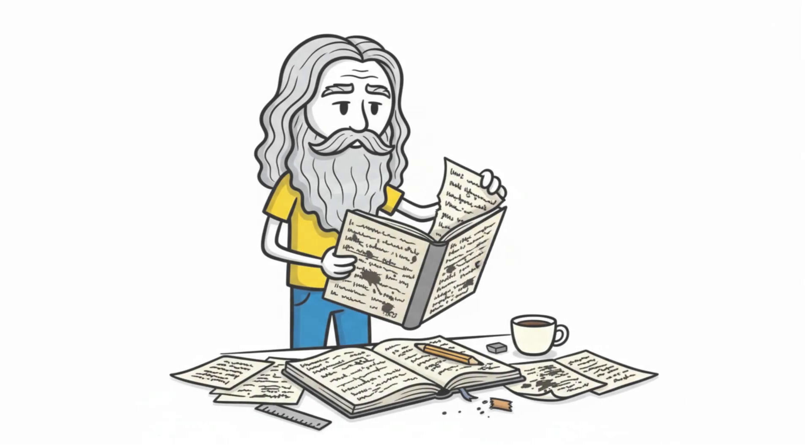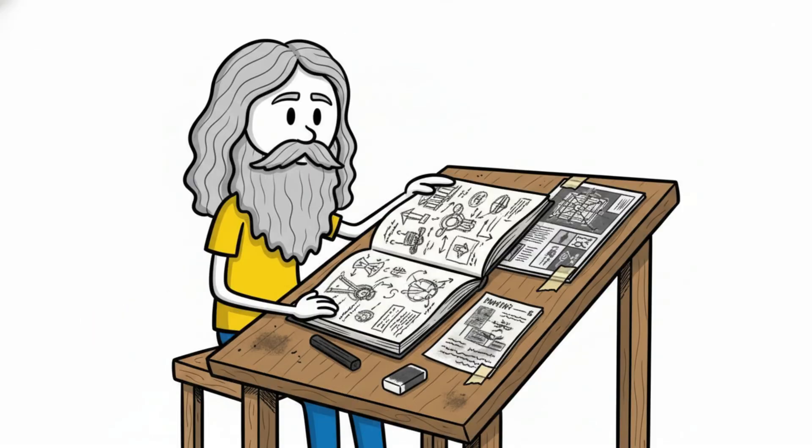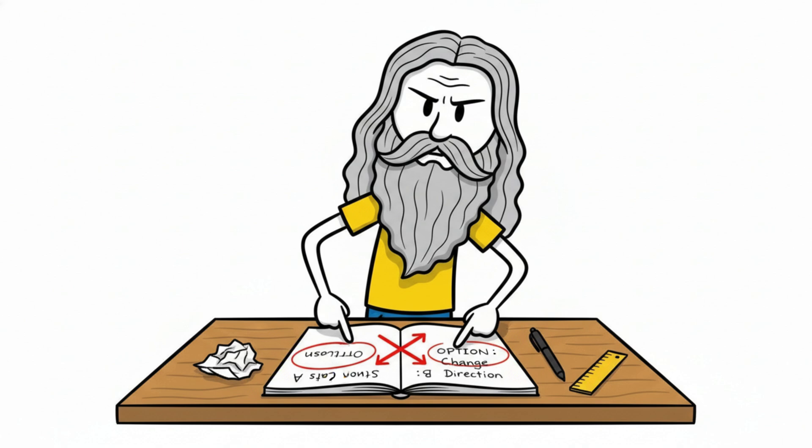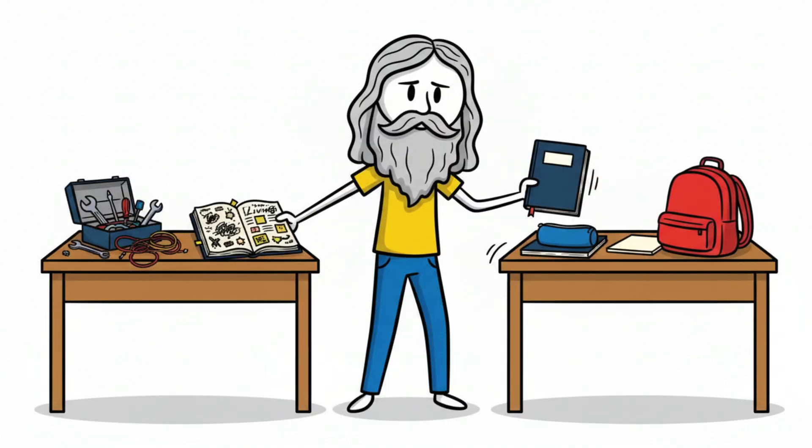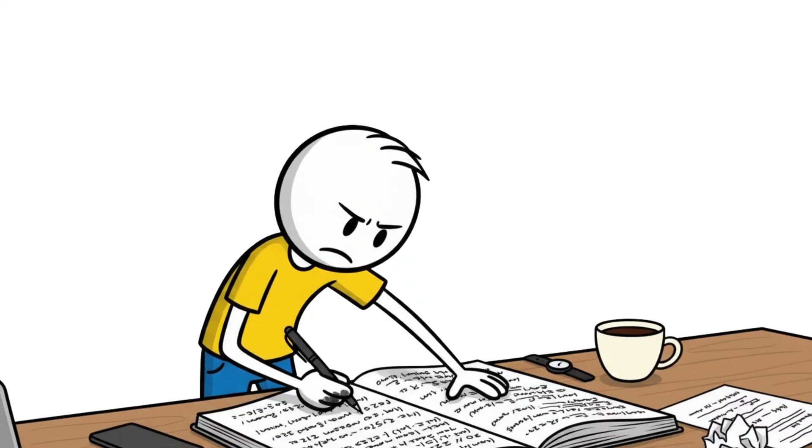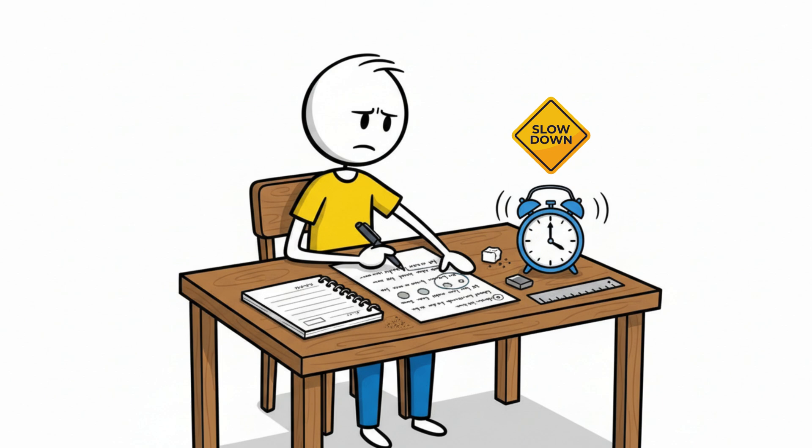Leonardo da Vinci didn't write neat essays. He wrote questions, sketches, diagrams, fragments, contradictions. His notebooks weren't organized like school notes. They were alive. Like a mind in motion, interrogating itself. Because writing does something your brain can't fake. It slows your thoughts down enough to reveal what's missing.